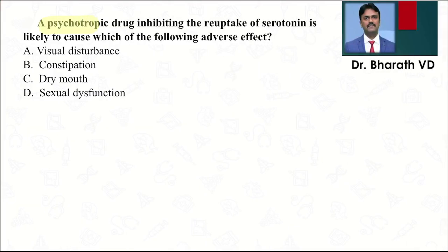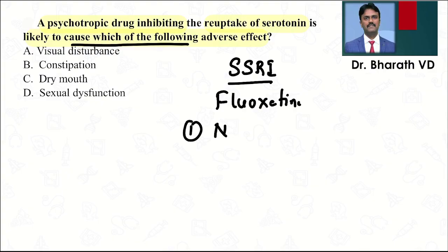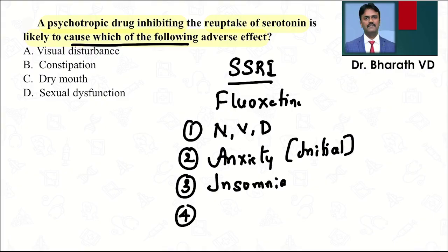Coming to the last question: a psychotropic drug inhibiting reuptake of serotonin is likely to cause which of the following adverse effects? These are SSRIs — selective serotonin reuptake inhibitors — for example, fluoxetine. The options are visual disturbance, constipation, dry mouth, or sexual dysfunction. Fluoxetine increases serotonin levels, which can cause nausea, vomiting, and diarrhea by stimulating serotonin in the chemoreceptor trigger zone and intestine. It can also cause anxiety initially and insomnia — that is why SSRIs should be given in the morning.